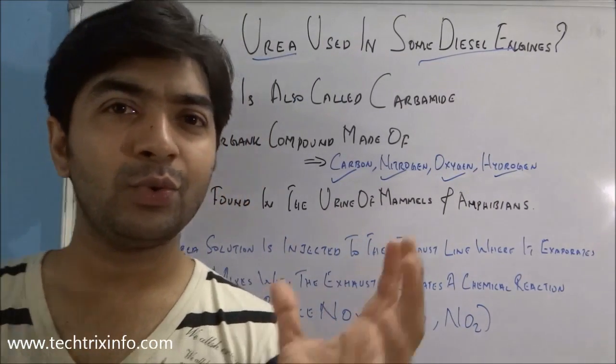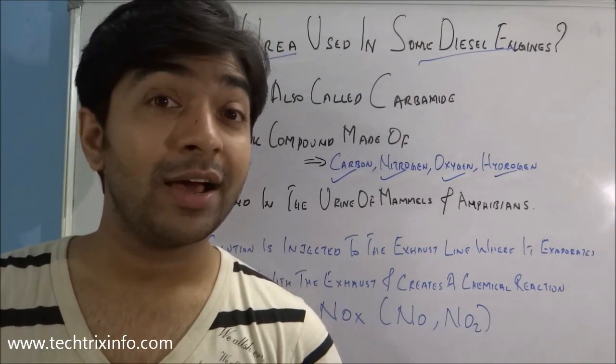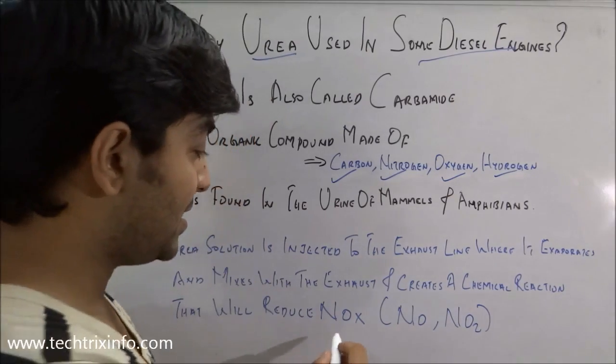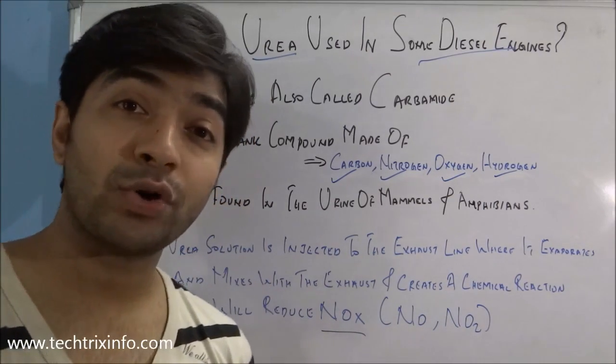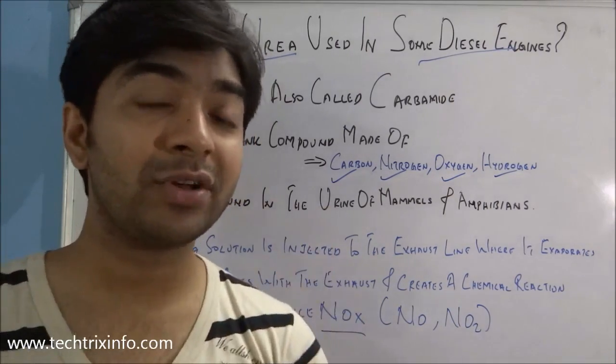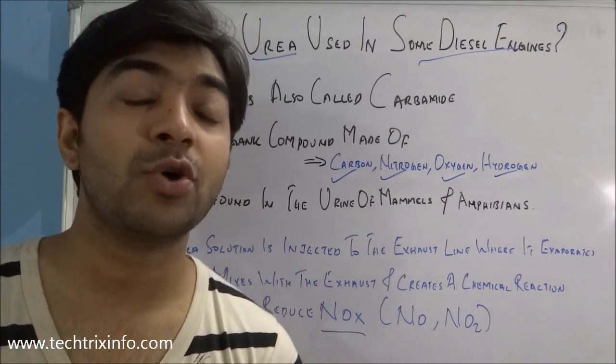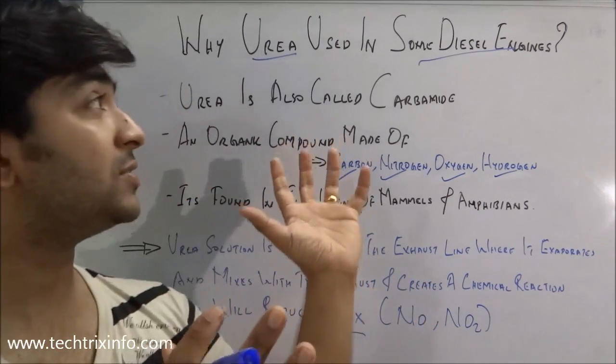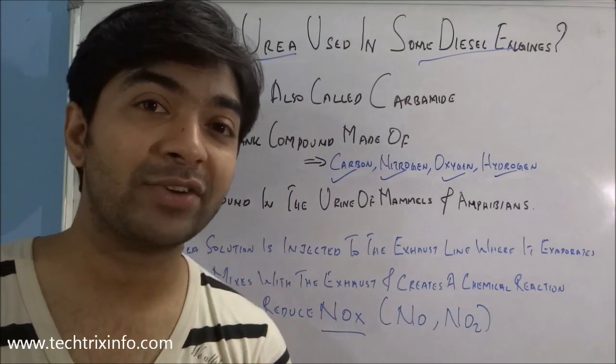You should all know about NOx—that's nitrogen oxide, nitrogen monoxide, or nitrogen dioxide. It is a very harmful component coming from the exhaust of automobiles. Urea is used to reduce the amount of nitrogen oxide, this harmful nitrogen oxide component from a diesel engine.